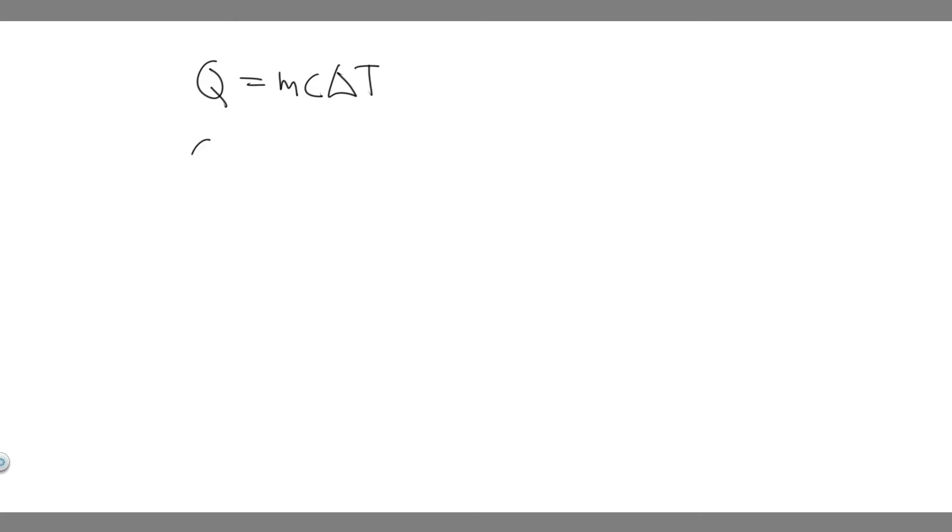First thing you want to do is manipulate it. I'm going to divide both sides by M times Delta T, and that's going to give us C by itself. So when you do that, you're going to get C equals Q divided by M times Delta T.